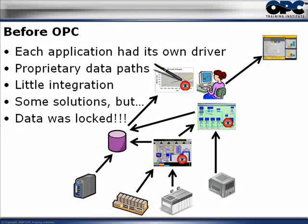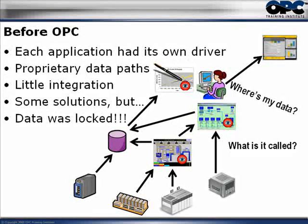Here is the source of the problem. Number one: where is my data? If I have data on a tank inside my refinery, what PLC do I get it from, what control system, and what is it called? Different PLCs may use different naming conventions. Number two: what happens when there are changes? When there's a change in one PLC, how does that change propagate from the PLC to the HMI, to the historian, to the ERP, to the CMMS?